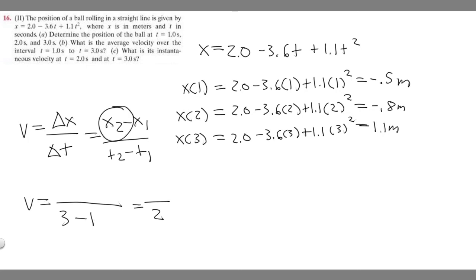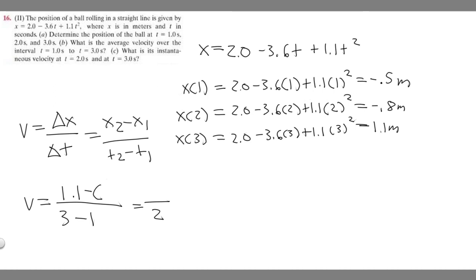For the numerator, our final position at 3 seconds is 1.1 meters, and we found from part A that the position at 1 second is minus 0.5 meters. So 1.1 minus minus 0.5 equals 1.6. That gives us 1.6 over 2, which equals 0.8. Since velocity is in meters per second, the answer to part B is 0.8 meters per second.